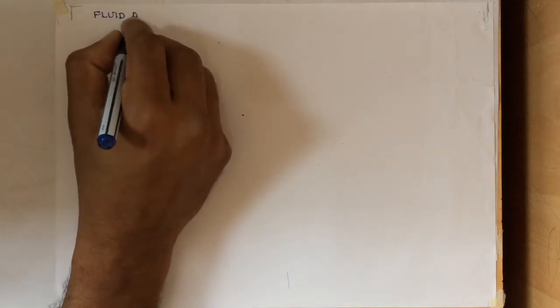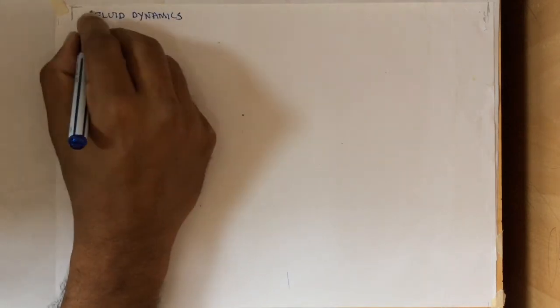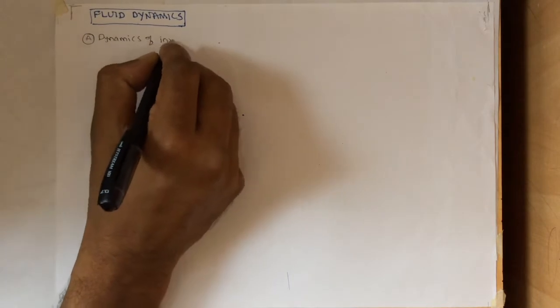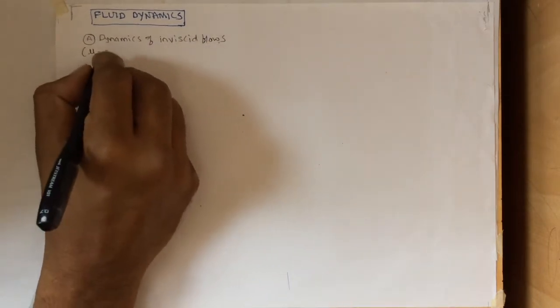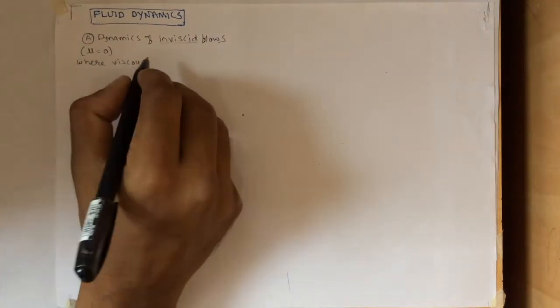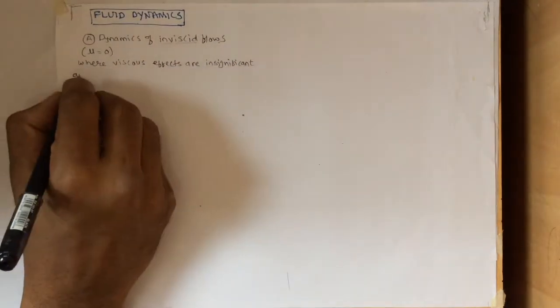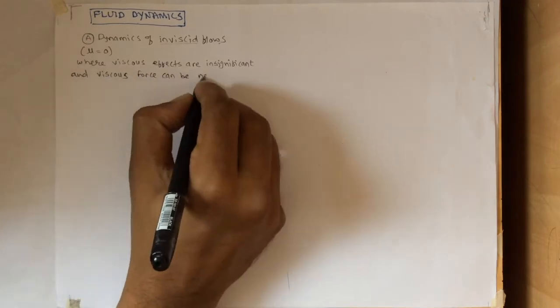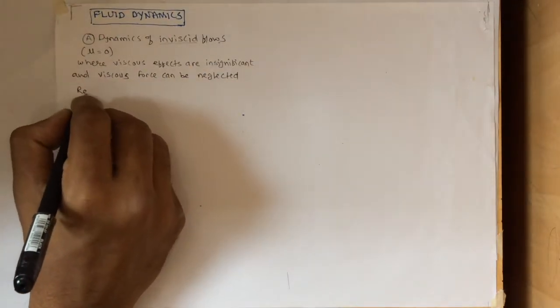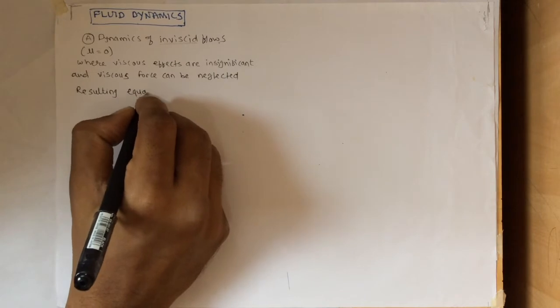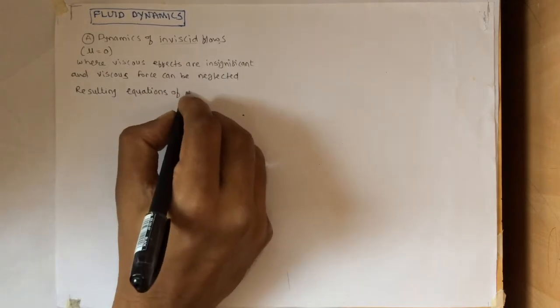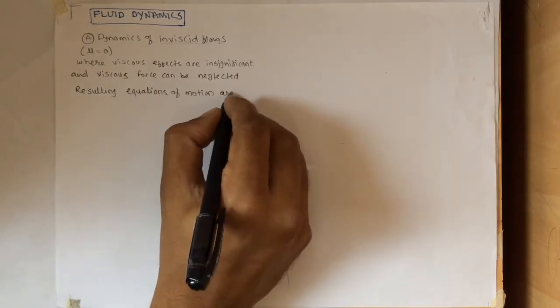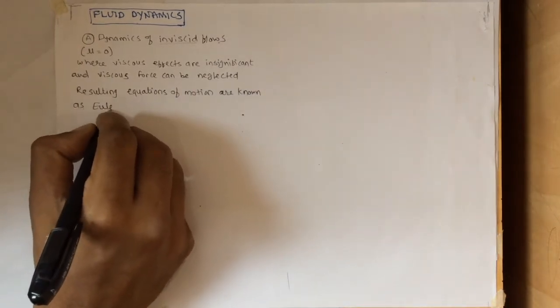This is a video on fluid dynamics, where we consider the fluid motion as well as the forces causing the motion. First we'll see the dynamics of inviscid flows, where viscosity is not considered or the viscous effects are very small — essentially insignificant and can be neglected. Without considering the viscous forces, the resulting equations of motion are called Euler's equations of motion.